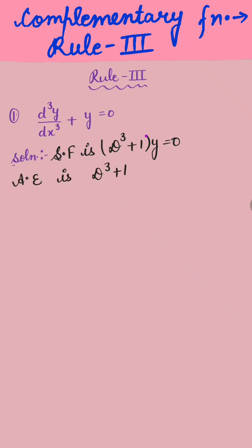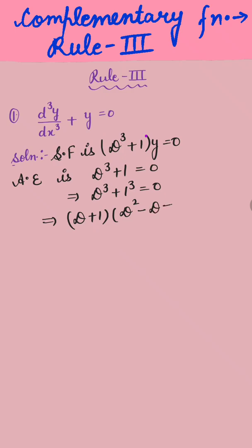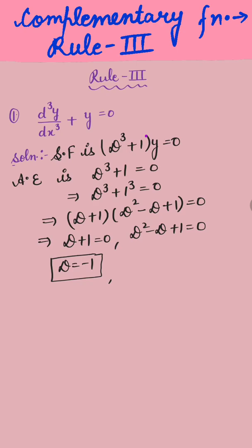The auxiliary equation is D³ + 1 = 0. We have the formula a³ + b³ = (a + b)(a² - ab + b²) = 0. So the roots are: D + 1 = 0 and D² - D + 1 = 0. From the first factor, D = -1.